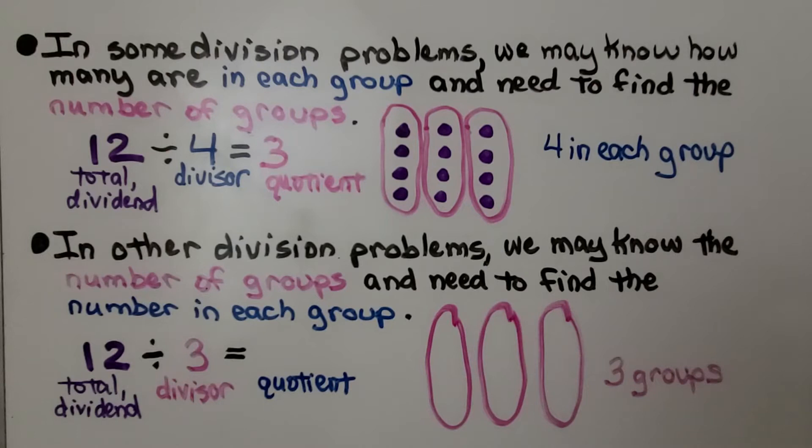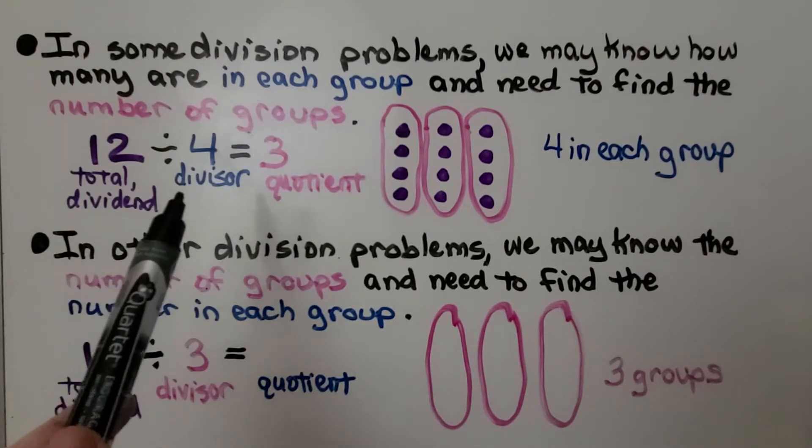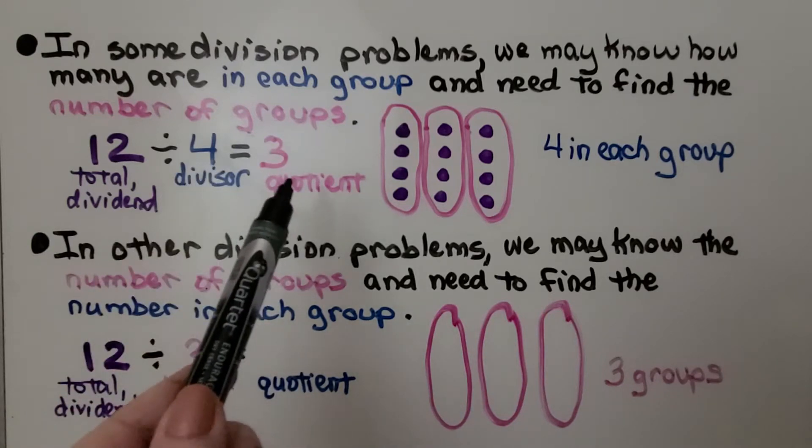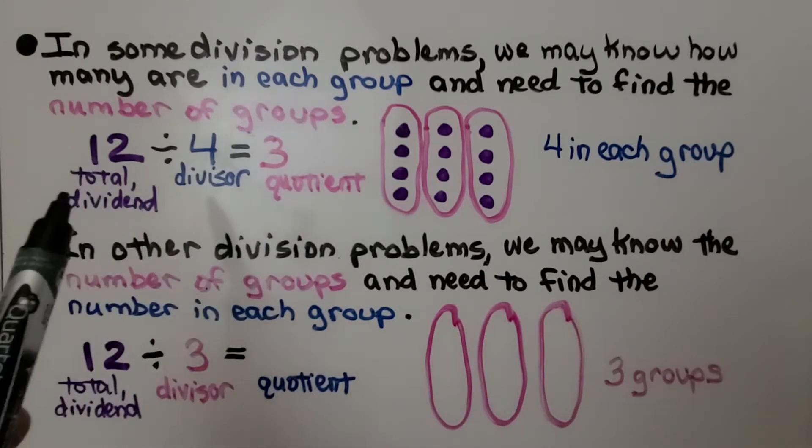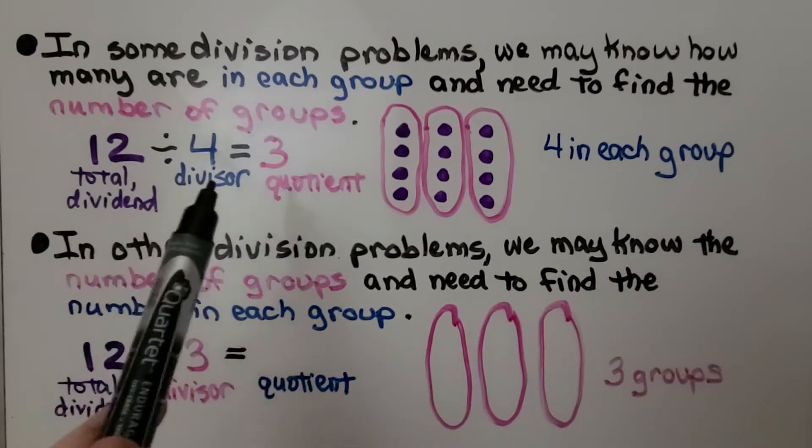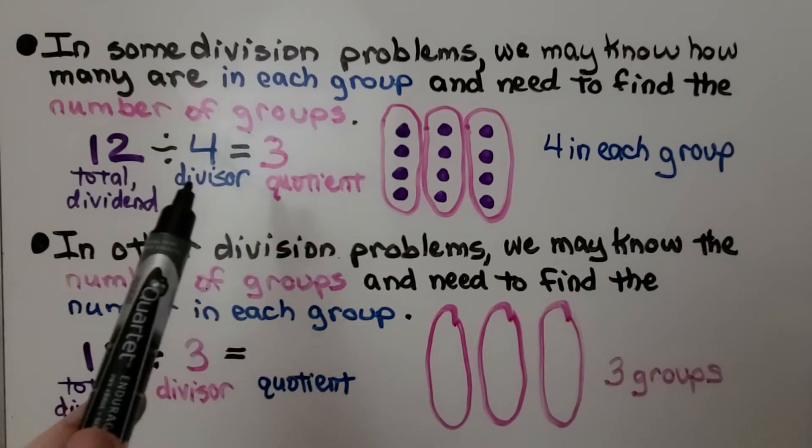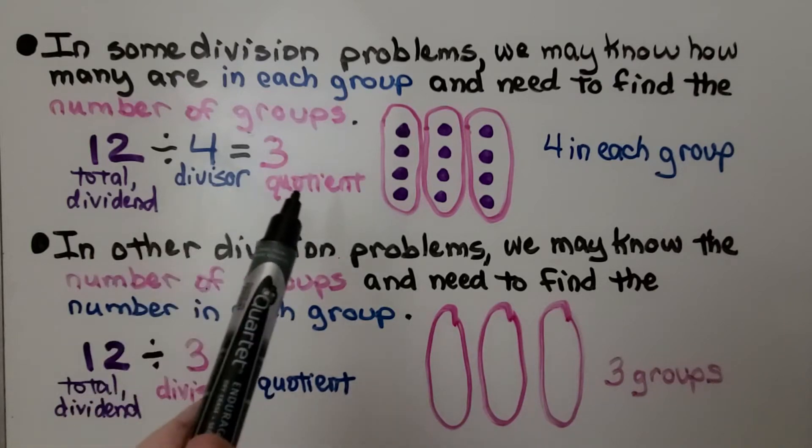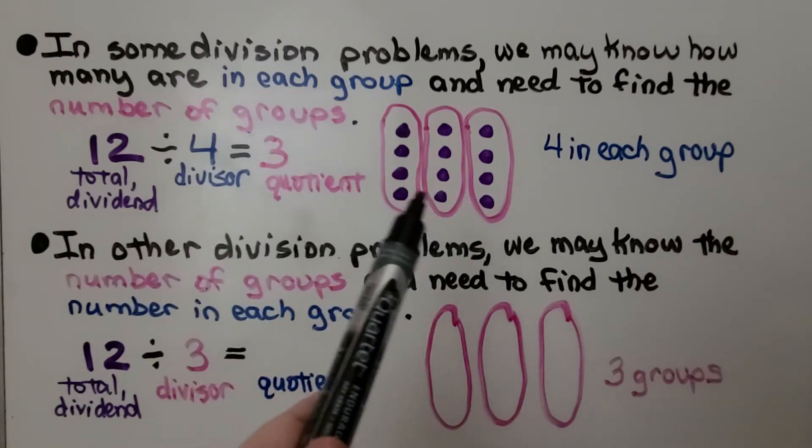In some division problems we may know how many are in each group and need to find the number of groups. If we have 12, that's the total, that's our dividend, and we need to divide it by 4. That'll be our divisor. That's how many are in each group. We'll have three groups. There's four in each group.